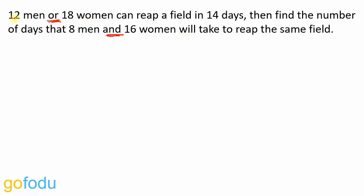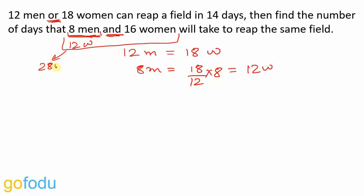This OR simply means that 12 men are equal to 18 women. 12 men can do as much work as 18 women in terms of working capacity. And in later part of the question we have 8 men. So if 12 men are equal to 18 women, 8 men will be equal to 18 upon 12 into 8 that is 12 women. So in place of 8 men I can write 12 women and total people given to me is 12 women plus 16 women that is 28 women.